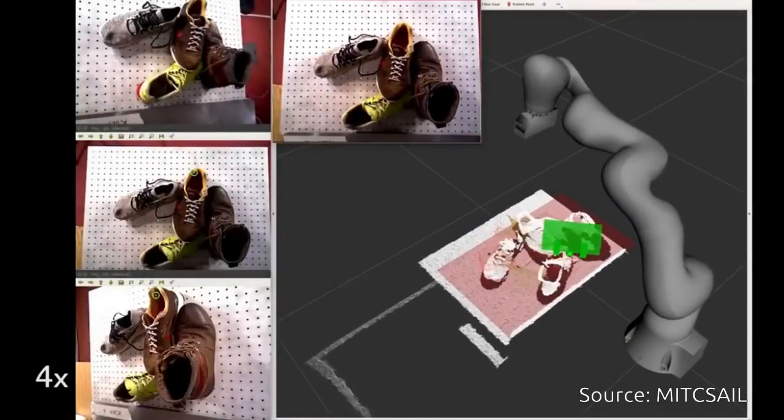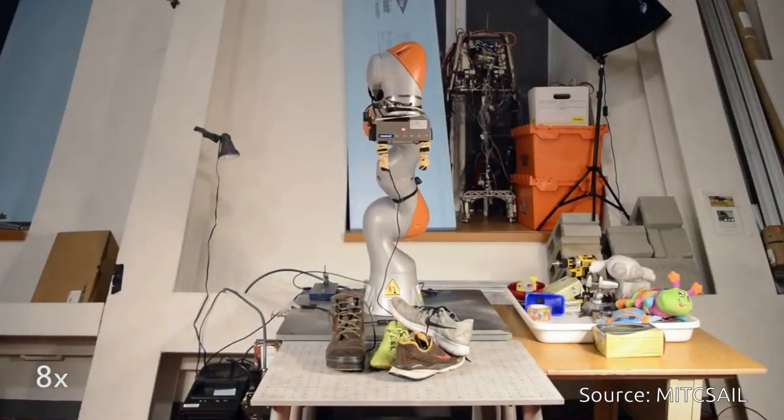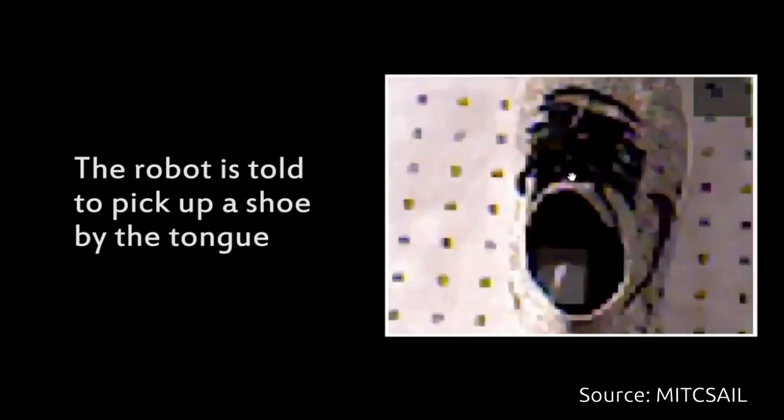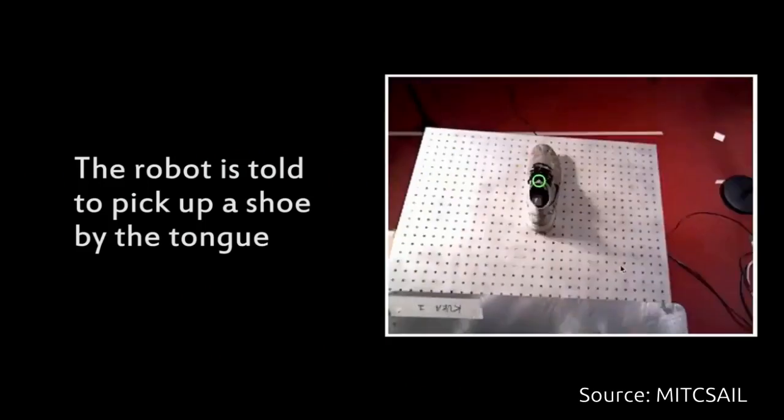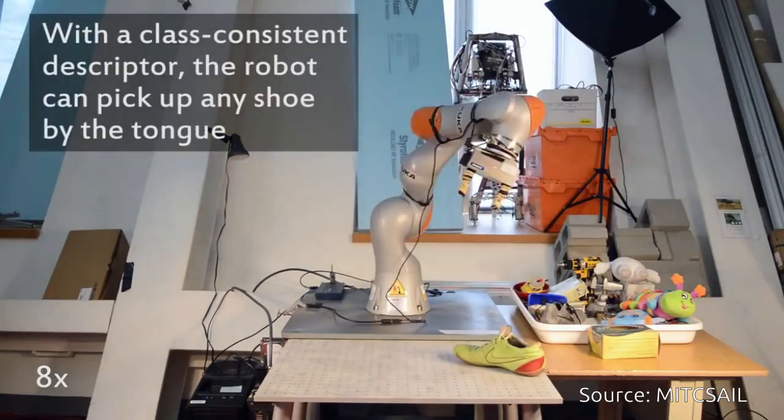For example, someone might use DON to get a robot to grab onto a specific spot on an object, say the tongue of a shoe. From that, it can look at a shoe it has never seen before and successfully grab its tongue.